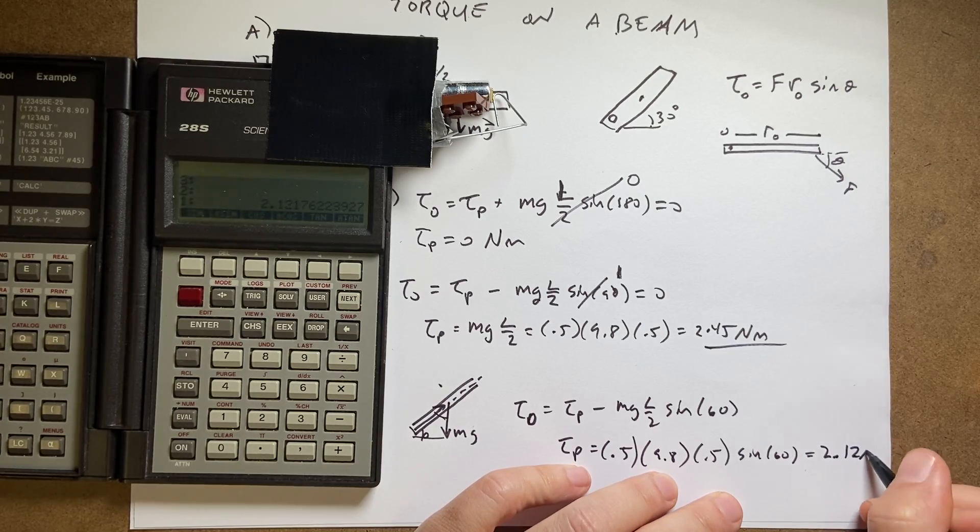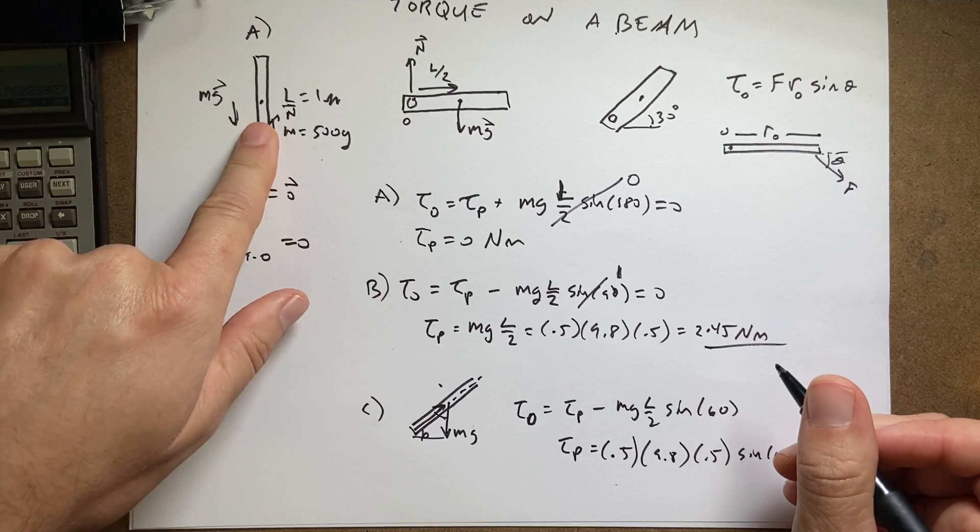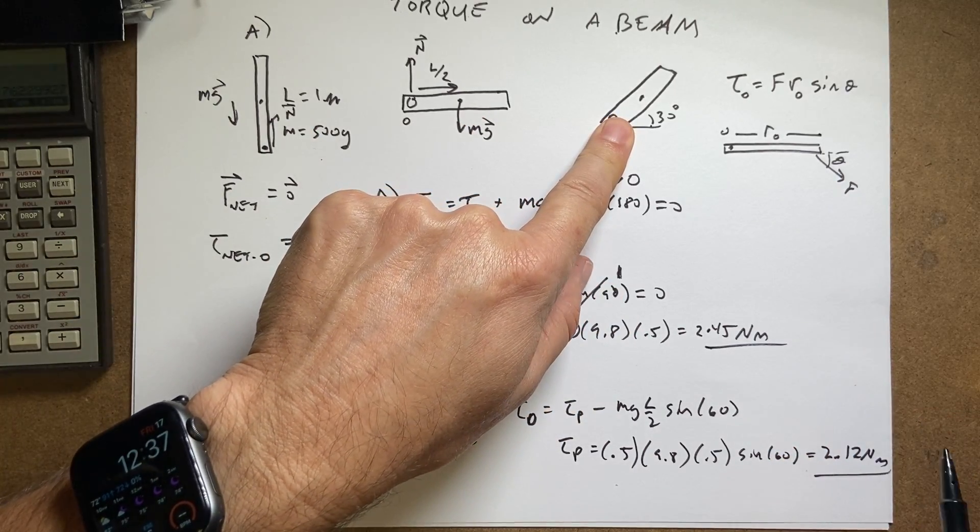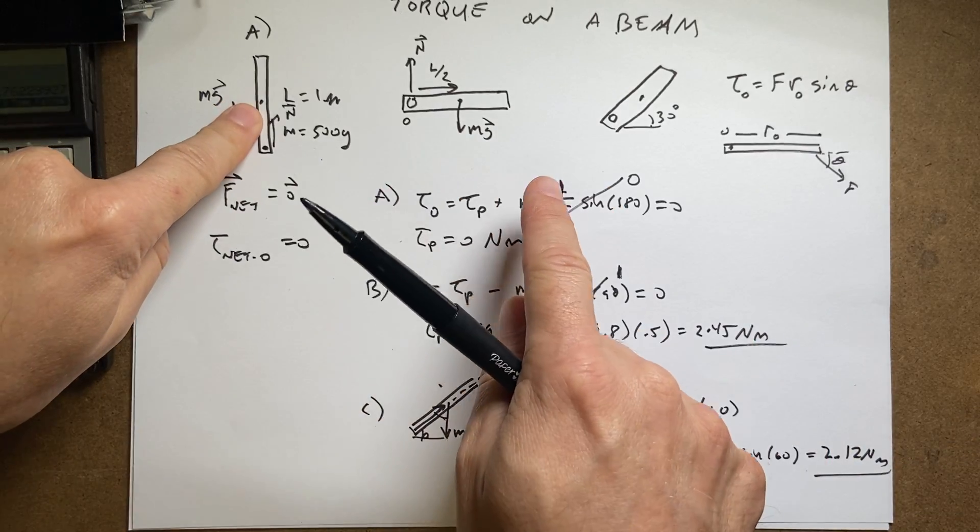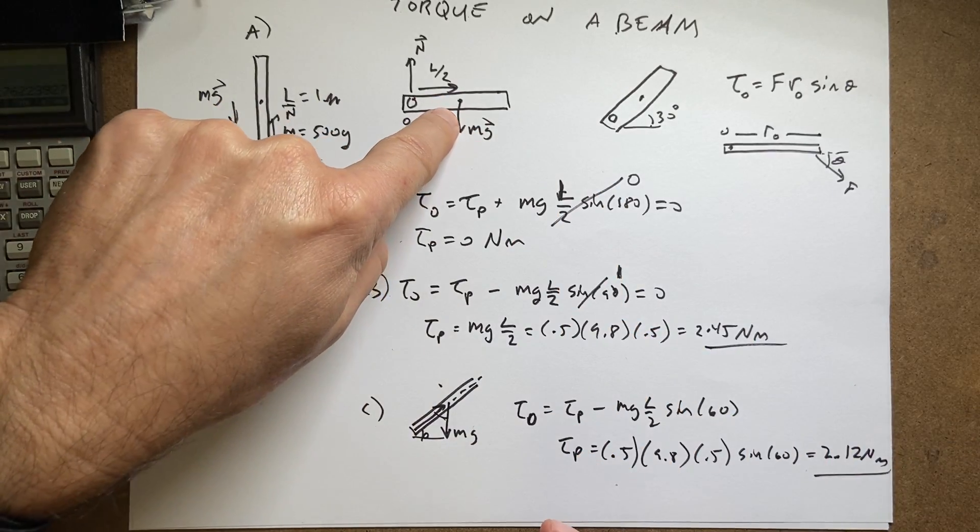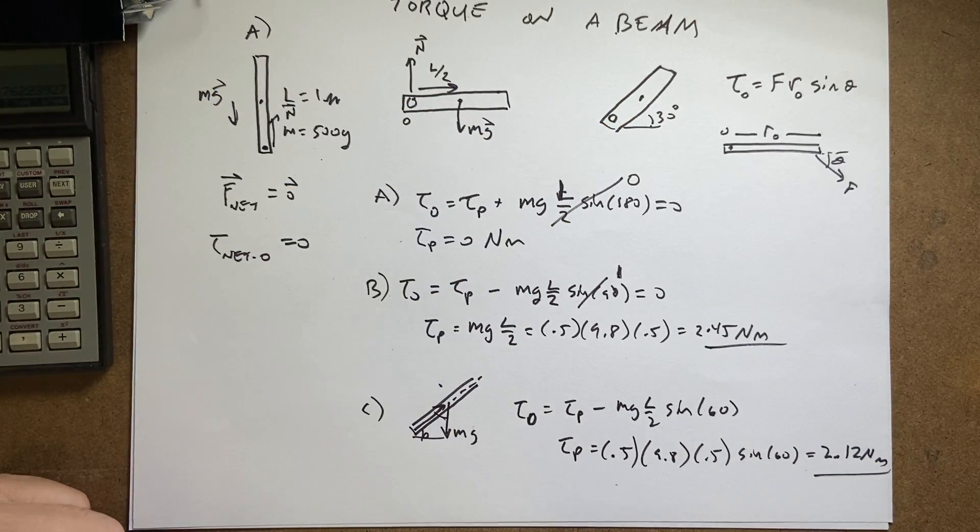Sine times, and I get 2.12 newton-meters. So notice this: this is the easiest to support, then this one, right? Because in this case the angle is kind of in between these two situations. This one, θ is at the maximum value for sine of θ, you get one, and here it's not. So there you go, torque.